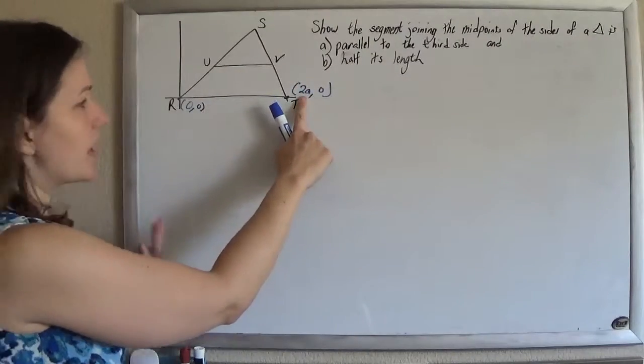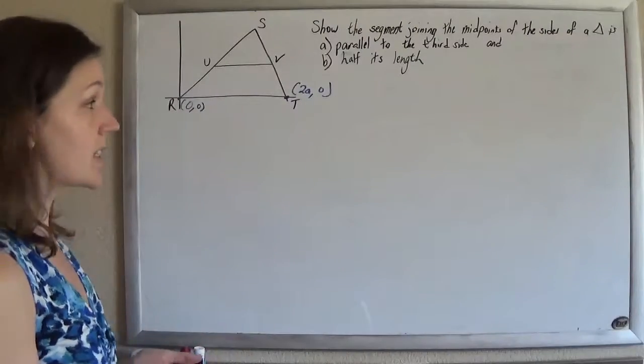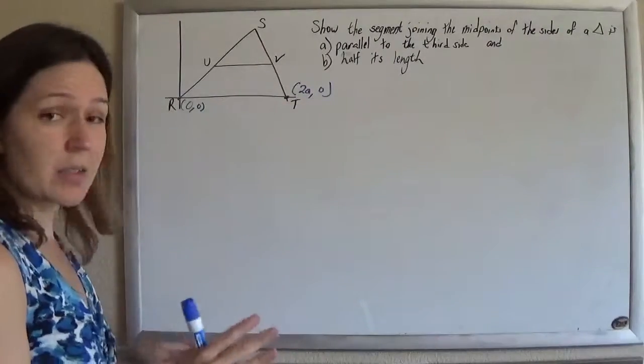And the reason I use the 2 is because I know I'm going to be using midpoints later, so it'll make it so I don't have to go to fraction land. You could call it a, 0, go to fraction land, that's okay.